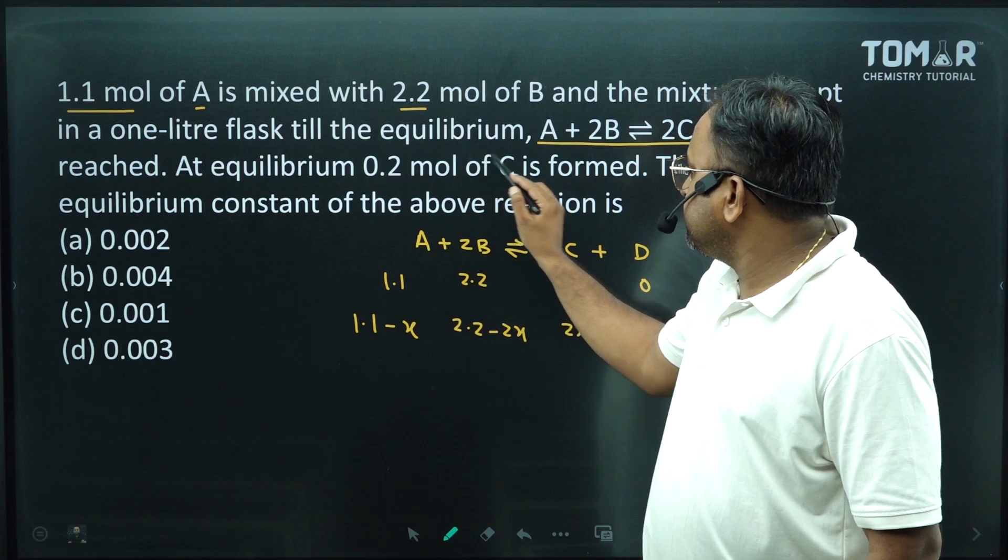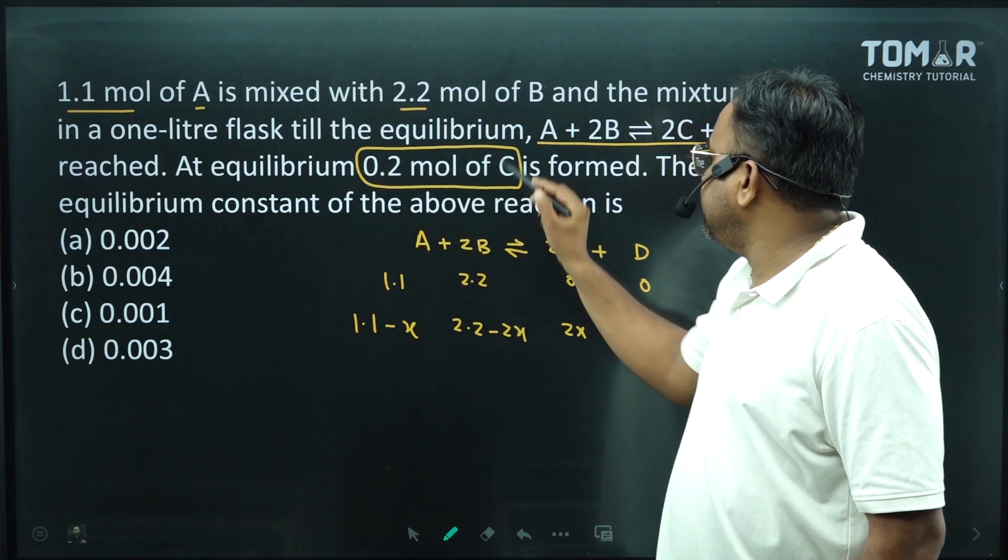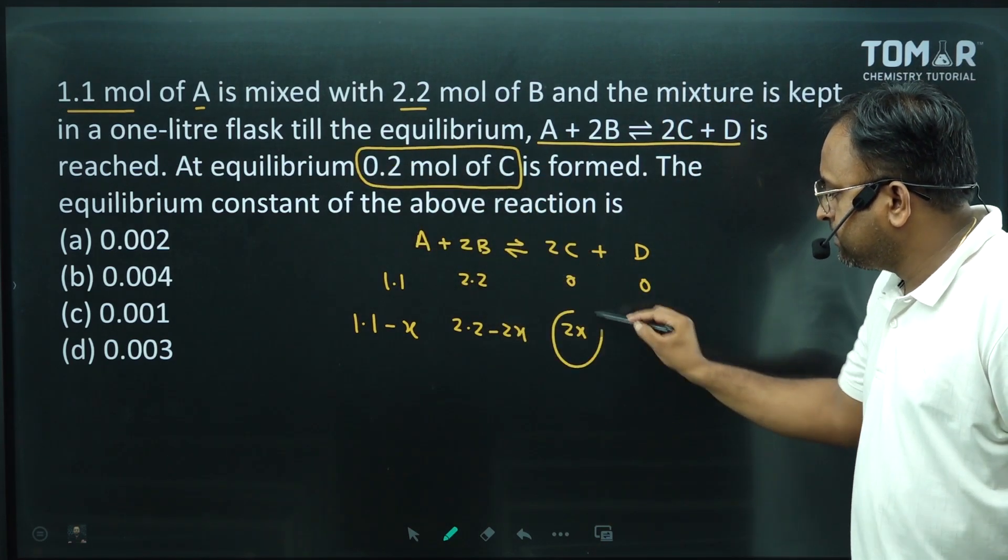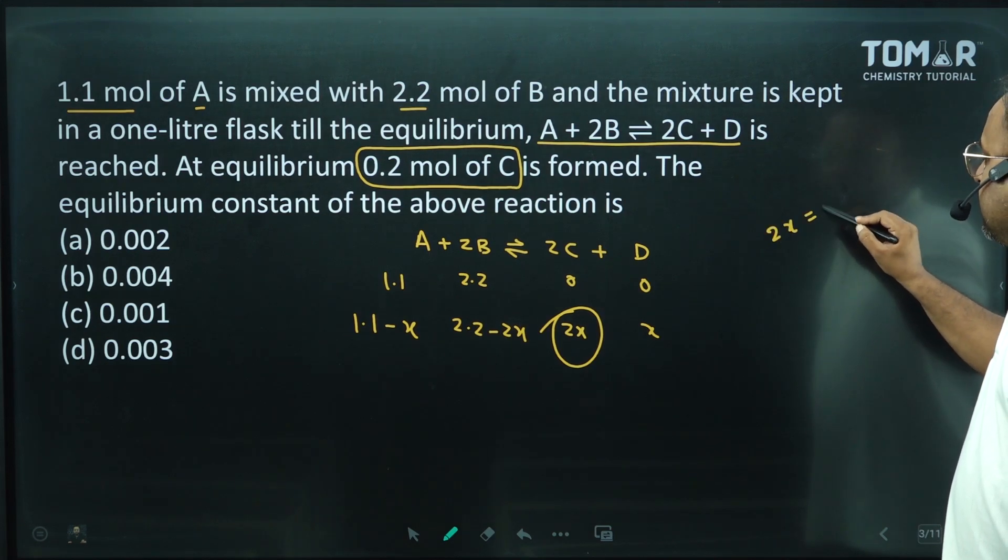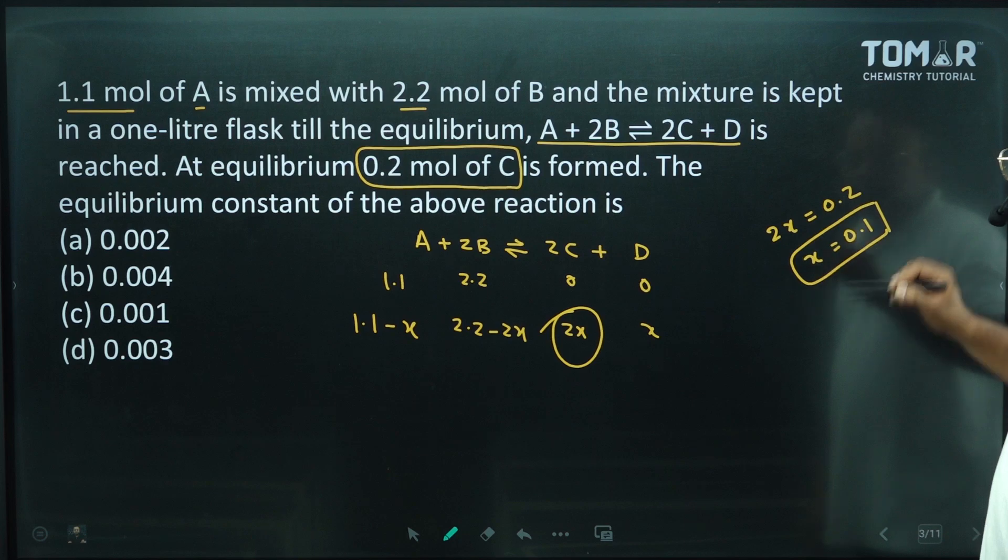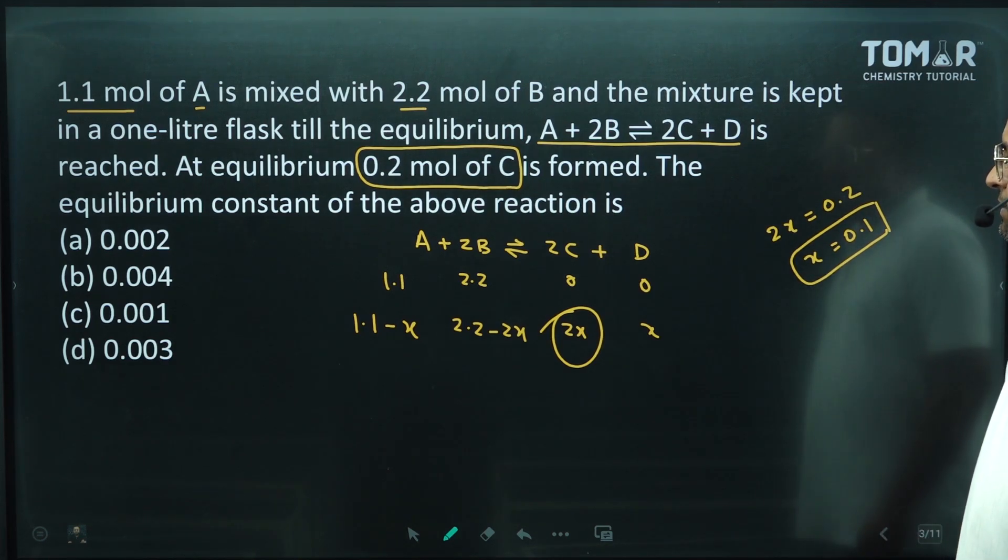At equilibrium, 0.2 mol of C is formed. 0.2. Now see, 2x equals to what? 0.2, so x equals 0.1. Yes, x equals 0.1.